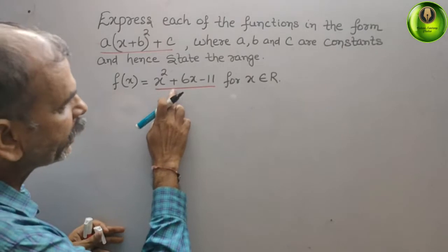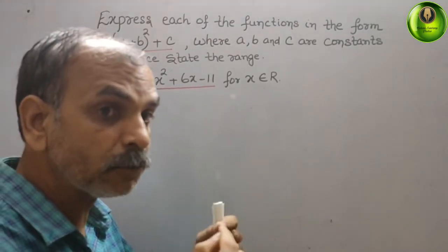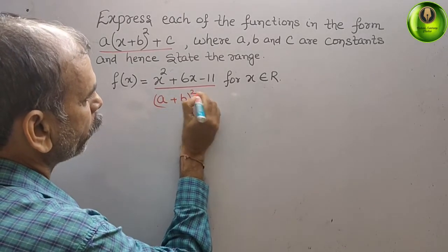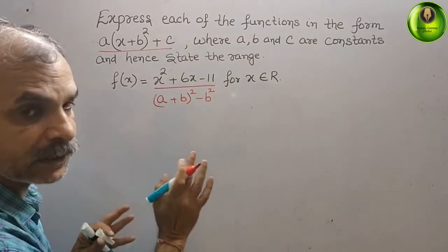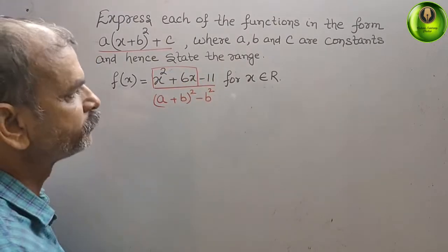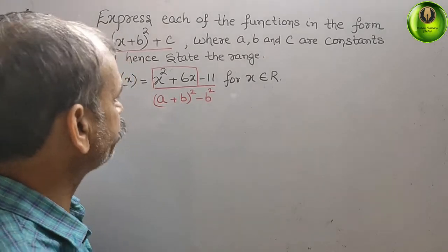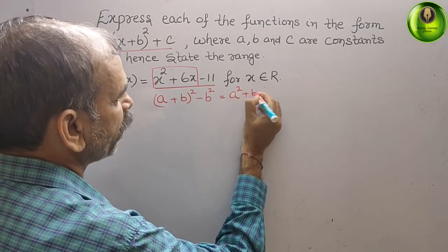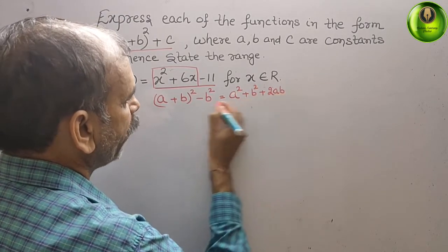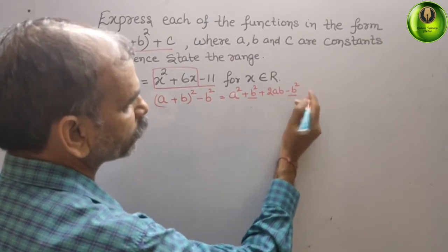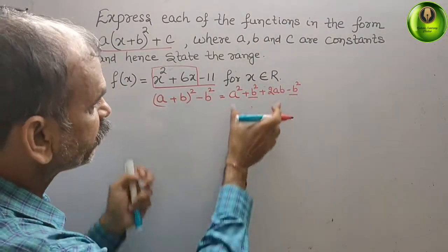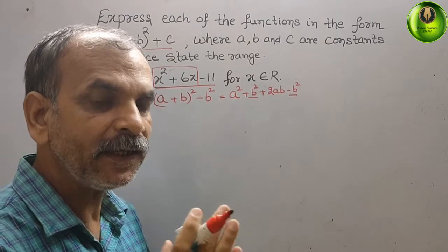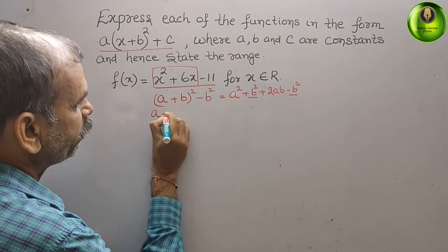Since the leading coefficient is positive, we will change it into the form (a + b)² by using the identity (a + b)² - b² = a² + 2ab. So x² + 6x becomes (x + b)² - b². Here a² = x², which means a = x.